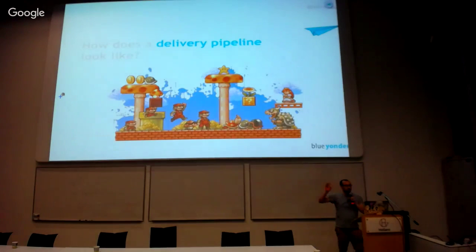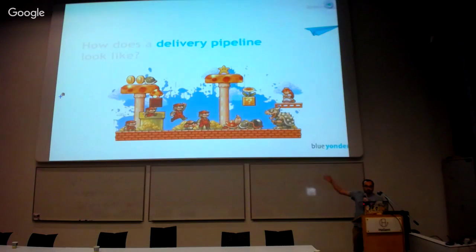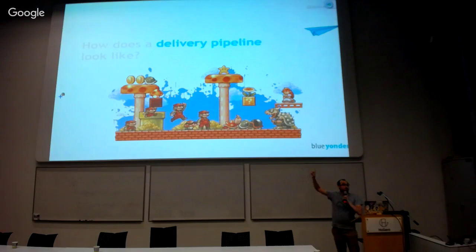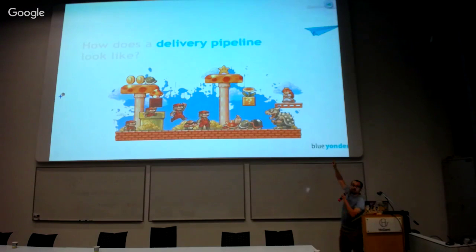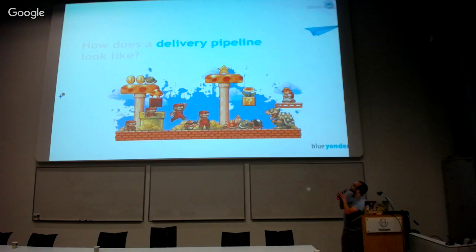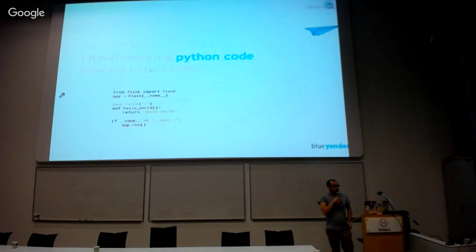So just a brief overview. This is a delivery pipeline. It's more or less a jump-and-run game, so the hero should not end up on the princess if he's a malicious hero, so we need to design the game.